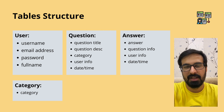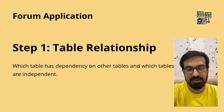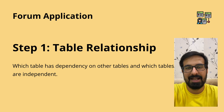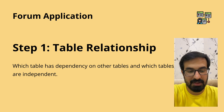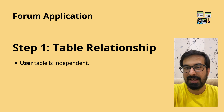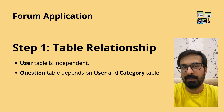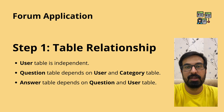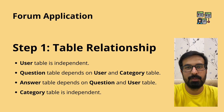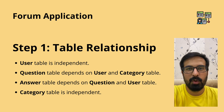Before designing tables, the first step should be identifying the relationships. When you develop your own application, you need to brainstorm the relationships between tables. The user table is independent. The question table depends on both the user and category tables. The answer table depends on the question and user tables. The category table is also independent, just like the user table. You should start by designing independent tables first, then move to dependent ones.